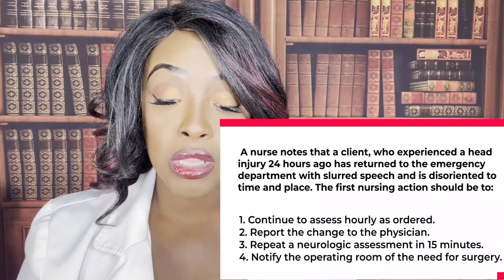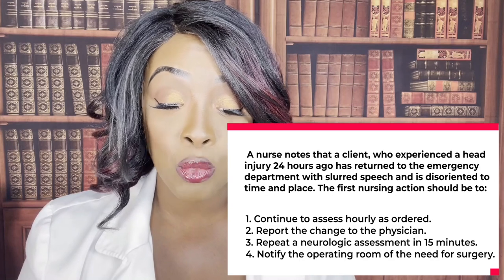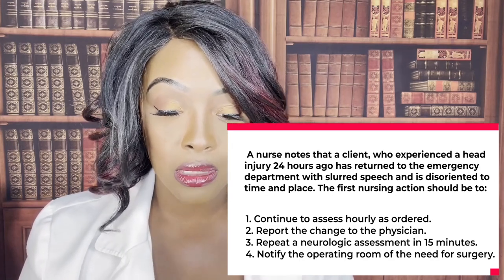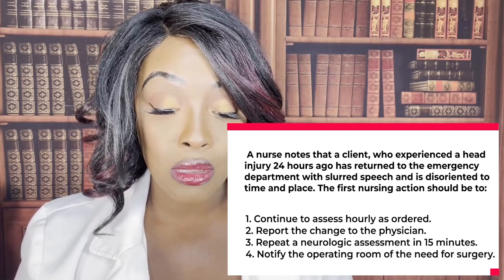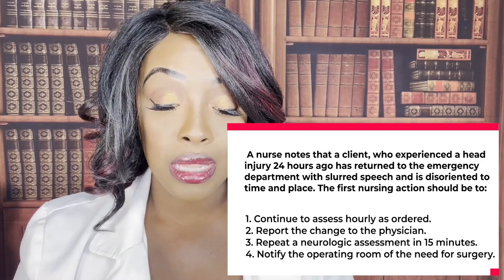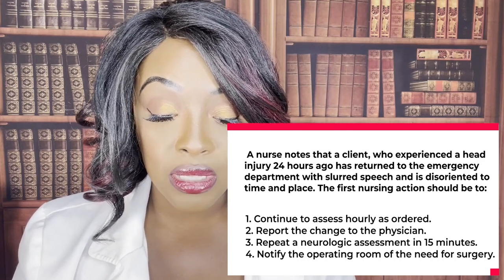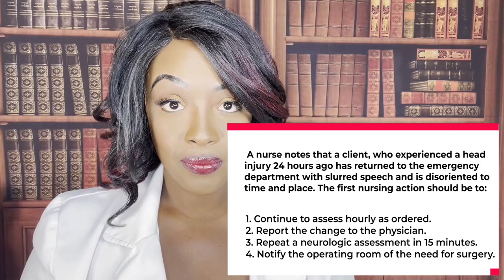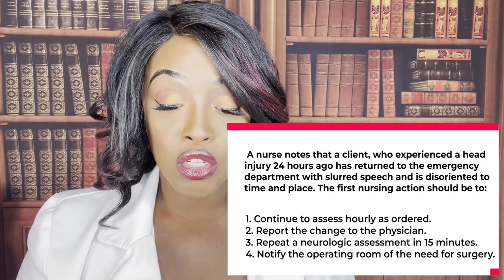Question two: A nurse notes that a client who experienced a head injury 24 hours ago has returned to the emergency department with slurred speech and is disoriented to time and place. The first nursing action should be: one, continue to assess hourly as ordered; two, report the change to the physician; three, repeat a neurological assessment in 15 minutes; or four, notify the operating room of the need for surgery. The correct answer is two — report the change to the physician.